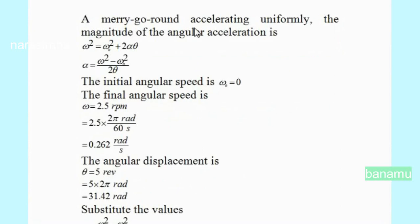For a merry-go-round accelerating uniformly, the magnitude of the angular acceleration is found using the kinematic equation: omega squared equals omega naught squared plus 2 alpha theta. Therefore, the angular acceleration alpha equals omega squared minus omega naught squared, divided by 2 theta.